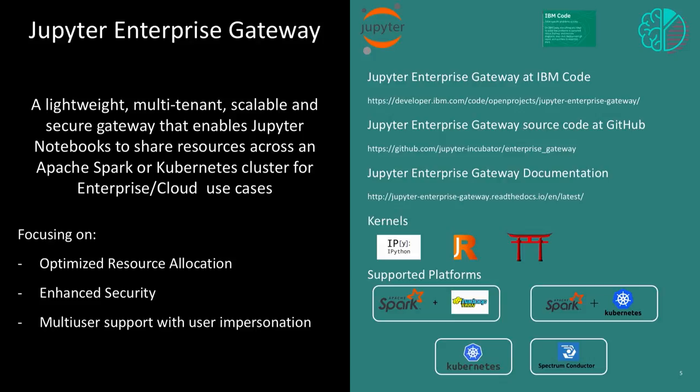When we started building the Enterprise Gateway, we focused on three main things. First, we wanted to make sure we had optimized resource allocation, which means we will not be using only the resources on the current machine — we will start using resources across the entire cluster so that we can scale the number of data scientists that can connect to a given runtime.